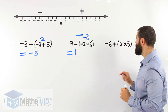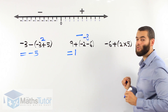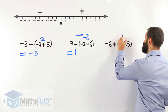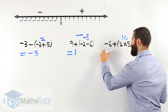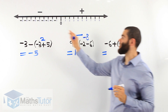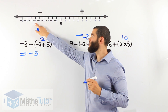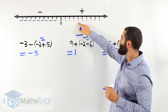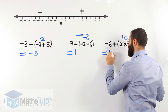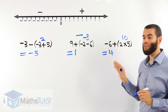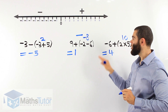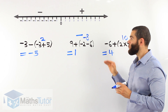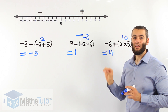One last example: negative 6 plus, in brackets, 2 times 5. Order of operations says complete the brackets first — 2 times 5 is 10. Now we have negative 6 plus 10. We start at negative 6 and add 10, going right: 1, 2, 3, 4, 5, 6, 7, 8, 9, 10. Our answer is positive 4, or just 4. We've now done three examples using order of operations. If we follow the steps and the process, we won't go wrong. The more practice you do with the number line, the better you'll get.